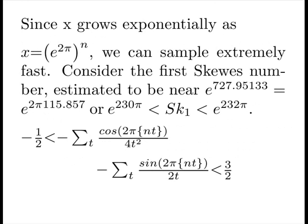Since x is growing exponentially, we can sample extremely fast. Consider the first Skewes number, estimated to be near e to the 727. That gives us our integer value of between, well, our pinning our swing between 115 and 116. That looks like something we can check.